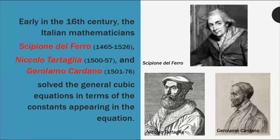Early in the 16th century, the Italian mathematicians — Scipione del Ferro, Nicolo Tartaglia, and Gerolamo Cardano — solved the general cubic equation in terms of the constants appearing in the equations. Cubic equations have constants as their last terms, and these Italian mathematicians gave emphasis to the role of those constants.